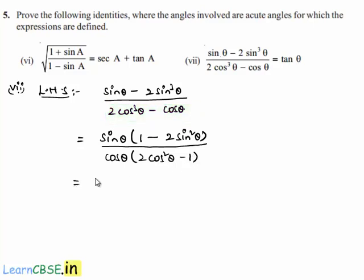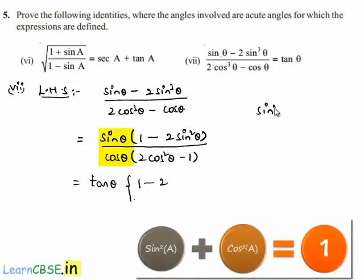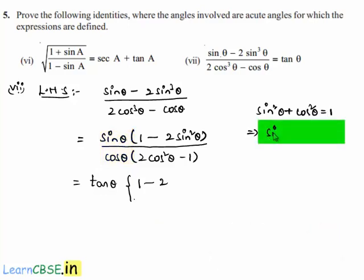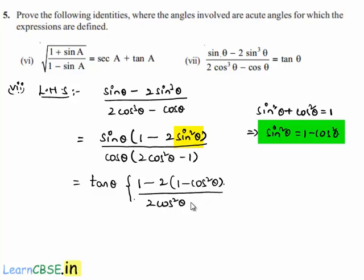That is equal to, if we write sin theta by cos theta separately, then it is nothing but tan theta into 1 minus 2 into. Here we have the identity that sin squared theta plus cos squared theta equals 1, which implies sin squared theta equals 1 minus cos squared theta. Let us substitute it here, then we get 2 times 1 minus cos squared theta divided by 2 cos squared theta minus 1.